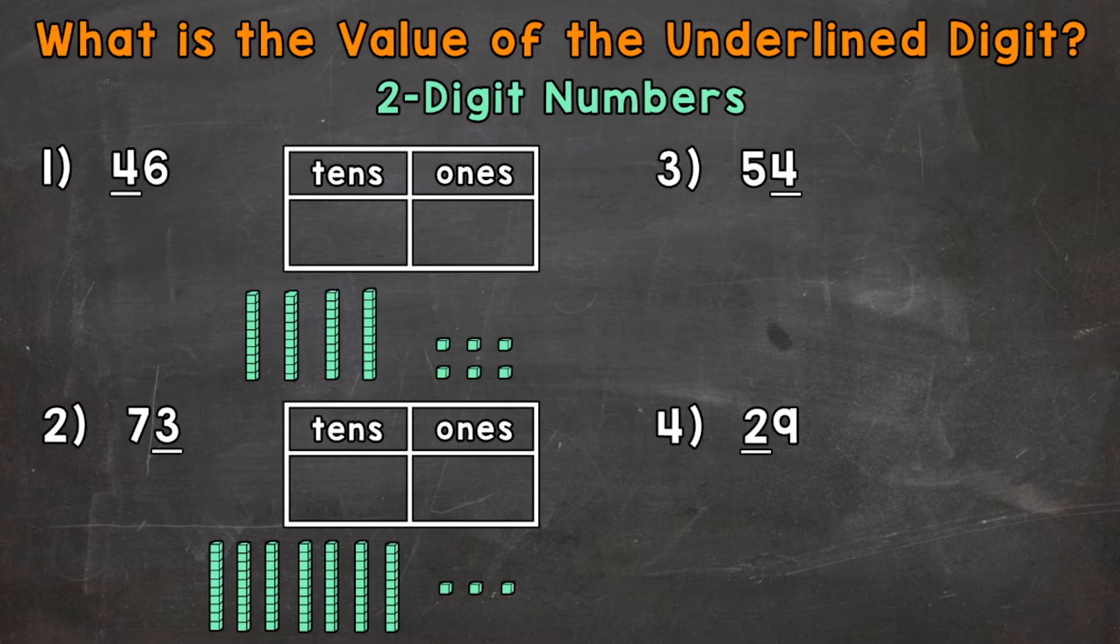So let's jump into number 1 where we have 46, and the 4 in the tens place is underlined, so we need to determine the value of that 4. Let's break that number down to fully understand what the value of that 4 is. So we'll take a look at the place value chart to the right there, and we have the number again.